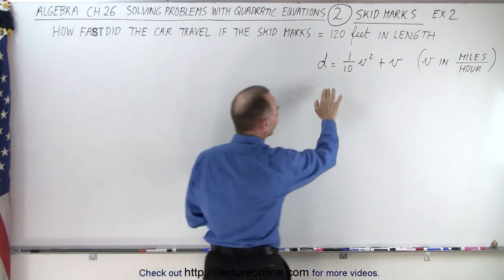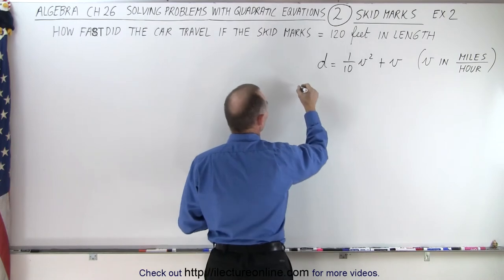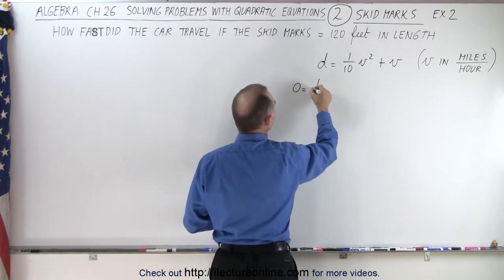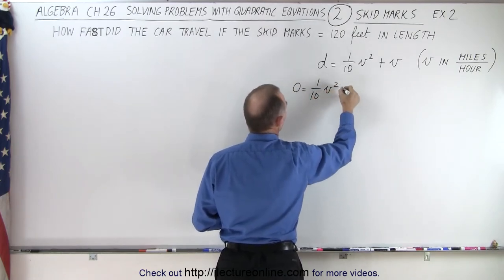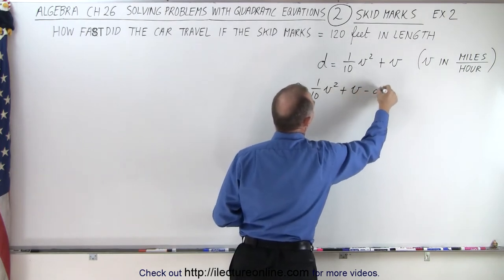So first we're going to write this as a quadratic equation with zero on one side. So we can say zero is equal to 1/10 v² + v minus the distance.